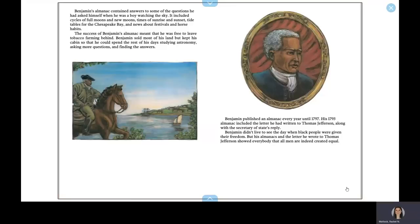Benjamin published an almanac every year until 1797. His 1793 almanac included the letter he had written to Thomas Jefferson, along with the Secretary of State's reply. Benjamin didn't live to see the day when black people were given their freedom, but his almanacs and the letter he wrote to Thomas Jefferson showed everybody that all men are indeed created equal.